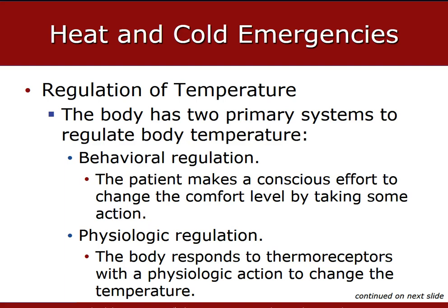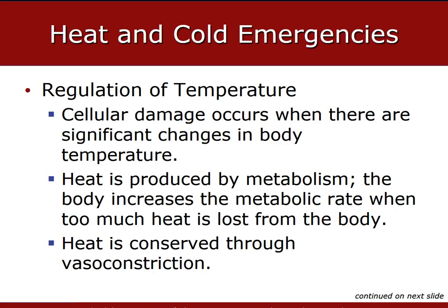Physiological regulation is basically an input from your thermoreceptors, which are located in the hypothalamus, which provides information to the brain, and the body responds with a physiological action to change the temperature disturbance without any conscious control by the patient. In a cold environment, the body constricts the peripheral vessels to preserve body heat and initiates shivering to involuntarily produce heat. In a hot environment, the body dilates the peripheral vessels to facilitate heat loss and initiates sweating to increase heat loss through evaporation. The body has to maintain an optimum body temperature so that cellular function can continue normally.